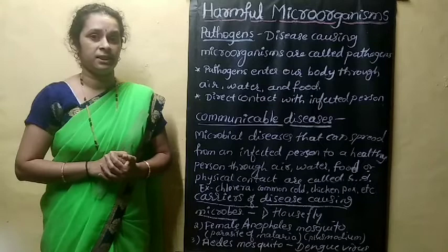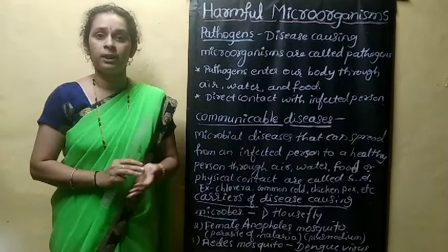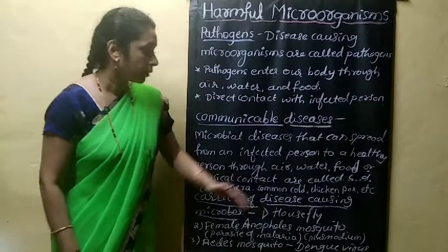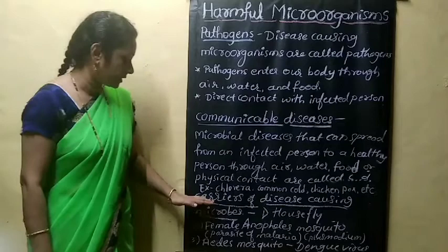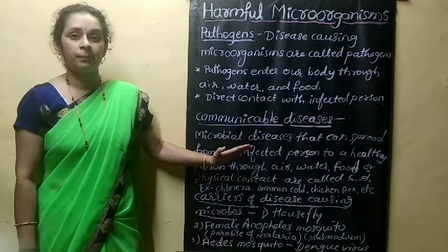What is the meaning of communicable disease? Microbial diseases that can spread from an infected person to a healthy person through air, water, food, or physical contact are called communicable diseases. Examples of communicable diseases are cholera, common cold, chicken pox, and tuberculosis.